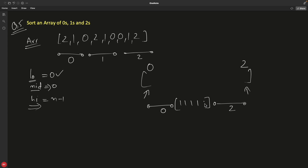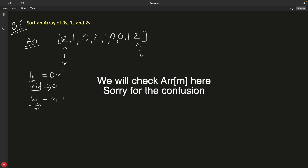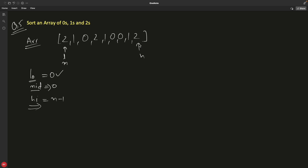Let me show you how this works. We have low and mid at the start and high at the end. We check the element at mid: is it zero? No. Is it one? No. Is it two? Yes — then we swap it with the element at high. After swapping, we decrement high, because we know that position now holds a two.